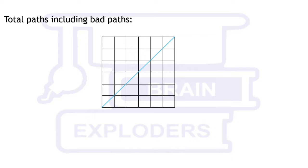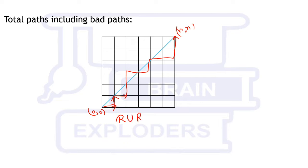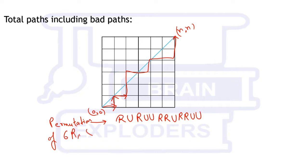Let us first see in how many ways we can reach from (0,0) to (n,n) on grid lines, either above or below the diagonal. Suppose this is a path going to (n,n). Here at first we took a right step, so let us write R, and in another step we took an up step, so let us write U. Similarly, here we have R, then 2U, then 2R, then U, then RR, then UU. So it is a permutation of 6 R's and 6 U's.